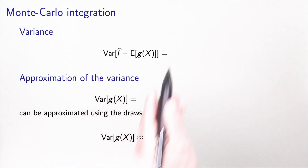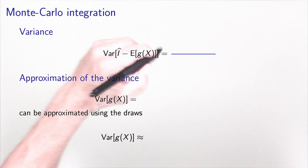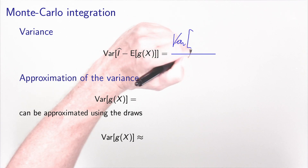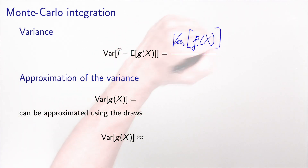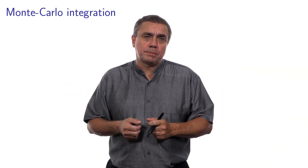The variance is calculated as the ratio between the variance of G(X) divided by capital R. Here you get the intuition: if G(X) has a high variability, you will need more draws to get a precise value of the expectation. The fact that R is at the denominator shows that if you increase the number of draws, you will decrease the variance of the estimator. But we don't need a precise value for the variance — we just need a rough idea about the precision, so we will approximate it.